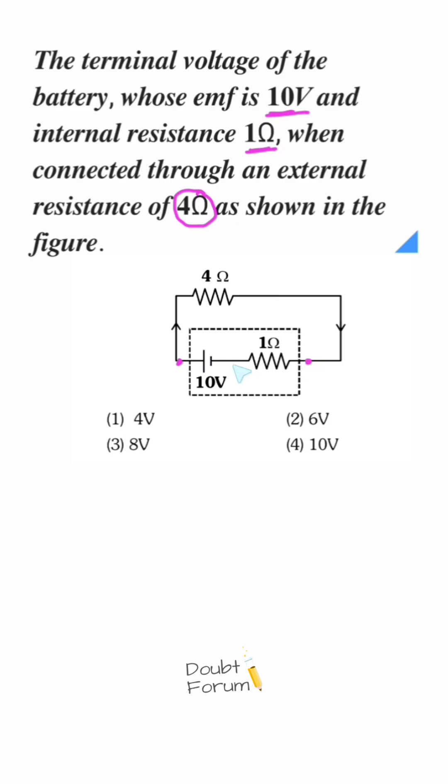We must remember that whenever a battery is not connected through any external resistance, its internal EMF will be its terminal voltage. But the moment we connect any external resistance across a battery, it will form a closed path,